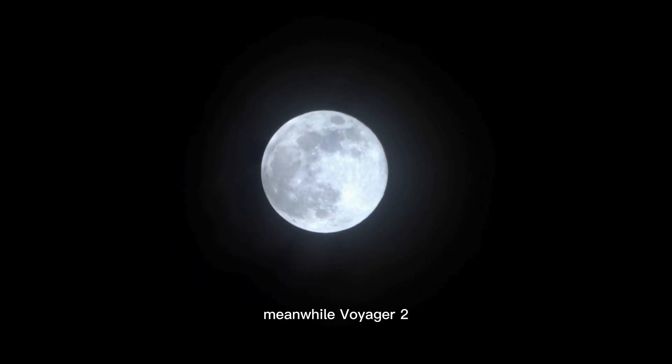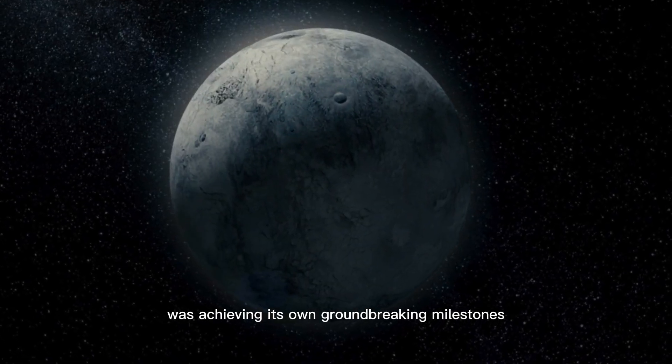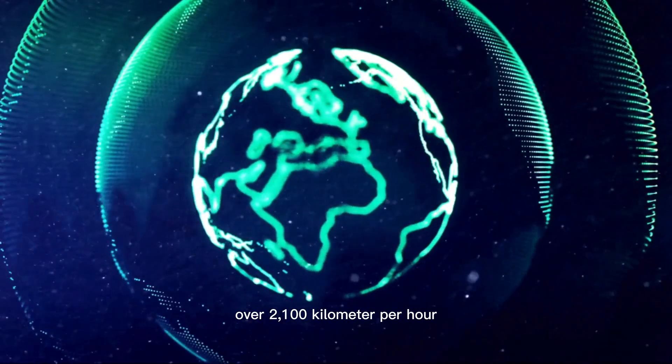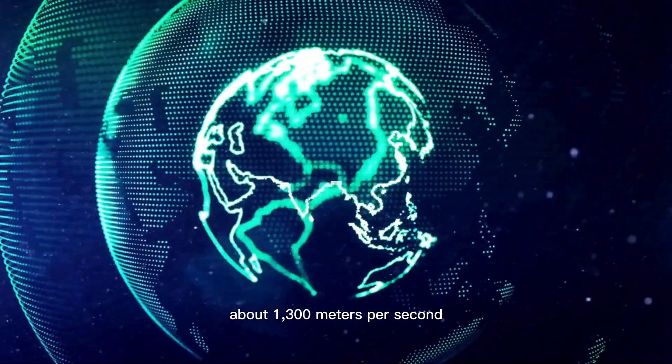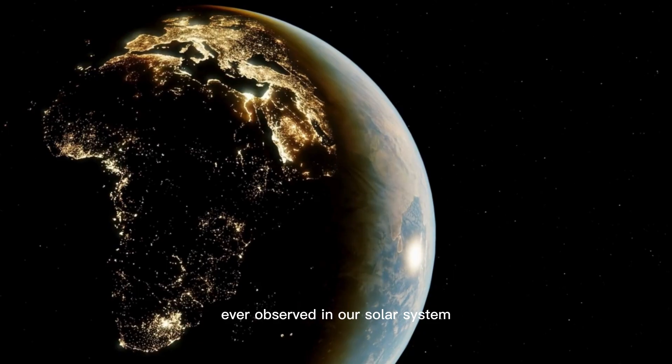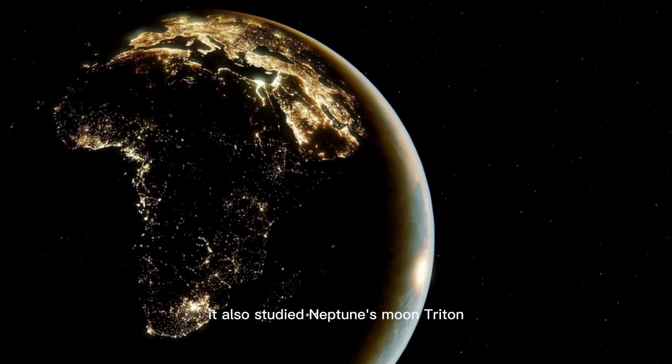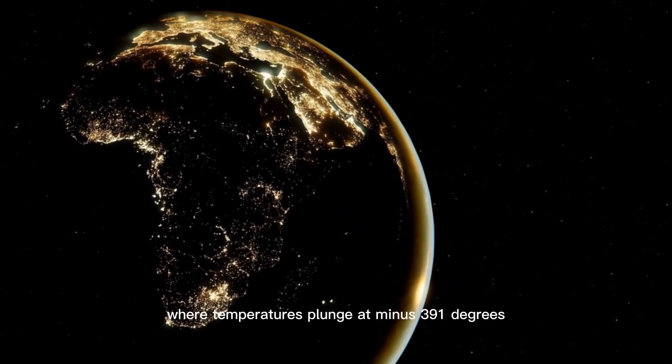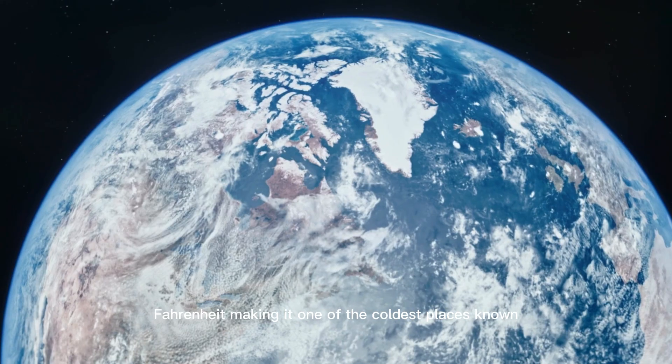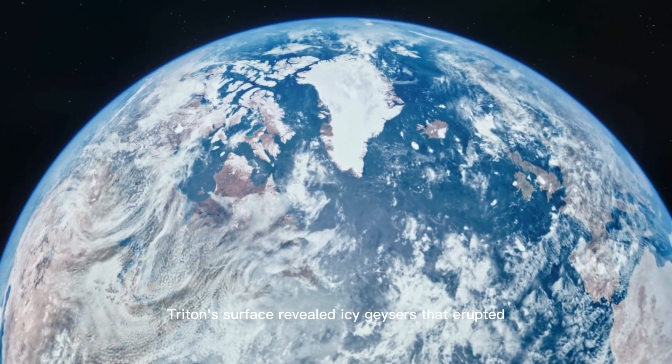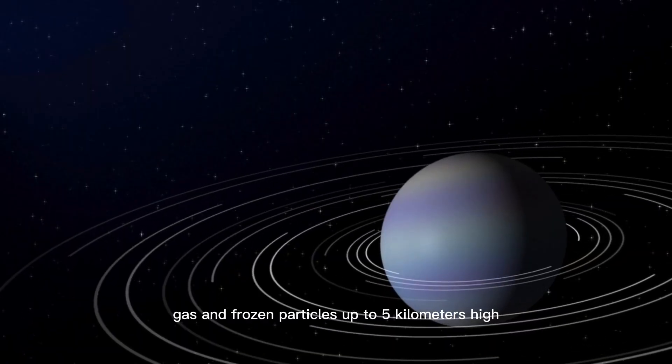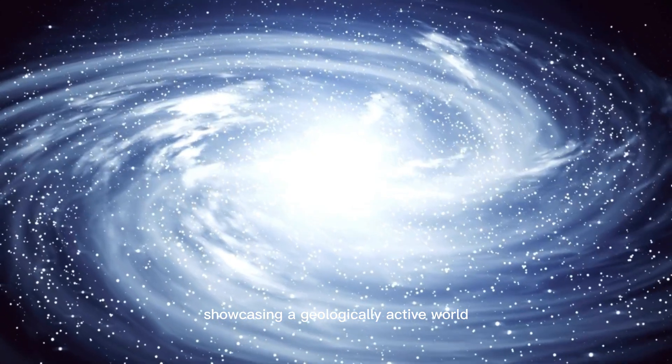Meanwhile, Voyager 2 was achieving its own groundbreaking milestones. It recorded Neptune's wind speeds over 2,100 kilometers per hour, the fastest atmospheric winds ever observed in our solar system. It also studied Neptune's moon Triton, where temperatures plunged to minus 391 degrees Fahrenheit. Triton's surface revealed icy geysers that erupted nitrogen gas and frozen particles up to 5 kilometers high.